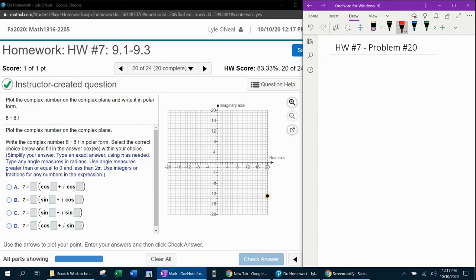So with just a couple of notes here to get started, A plus B I is the standard form of a complex number in rectangular form. In polar form, the standard form is R cosine theta plus I sine theta. That is polar form of a complex number.